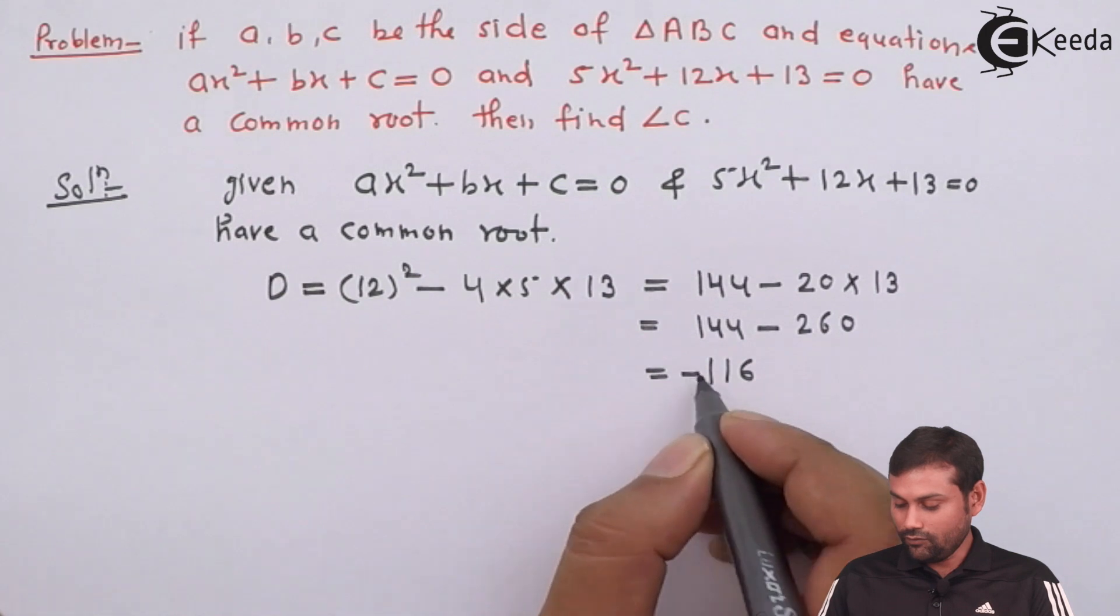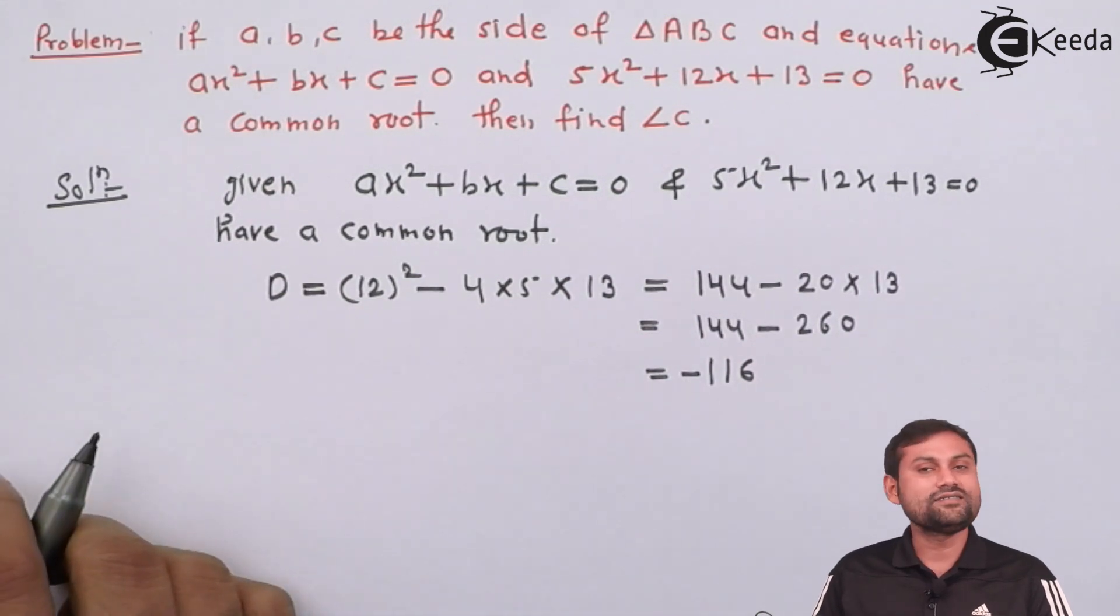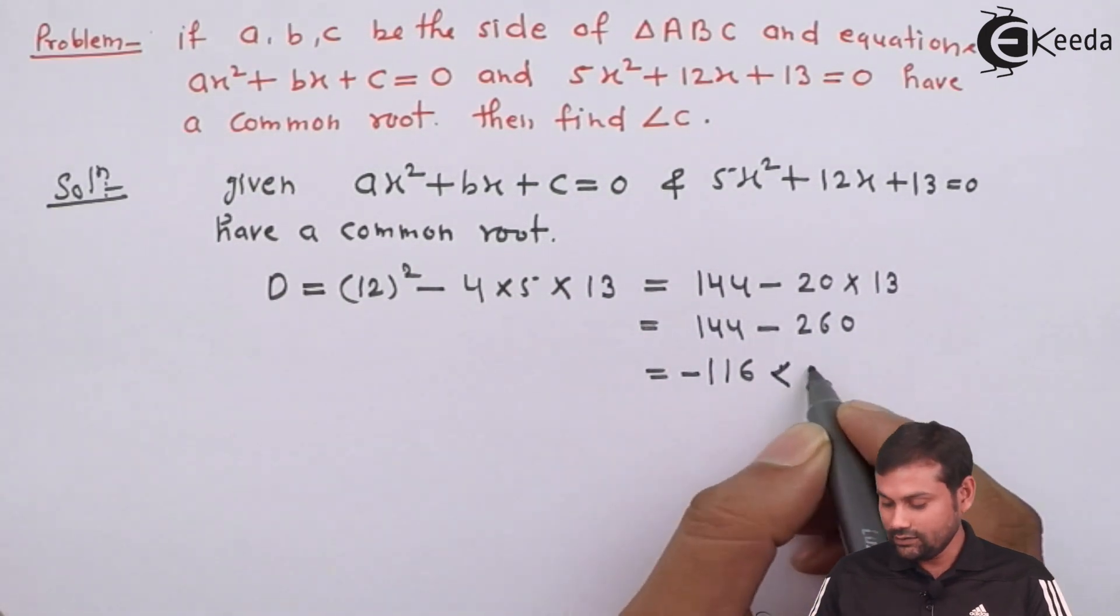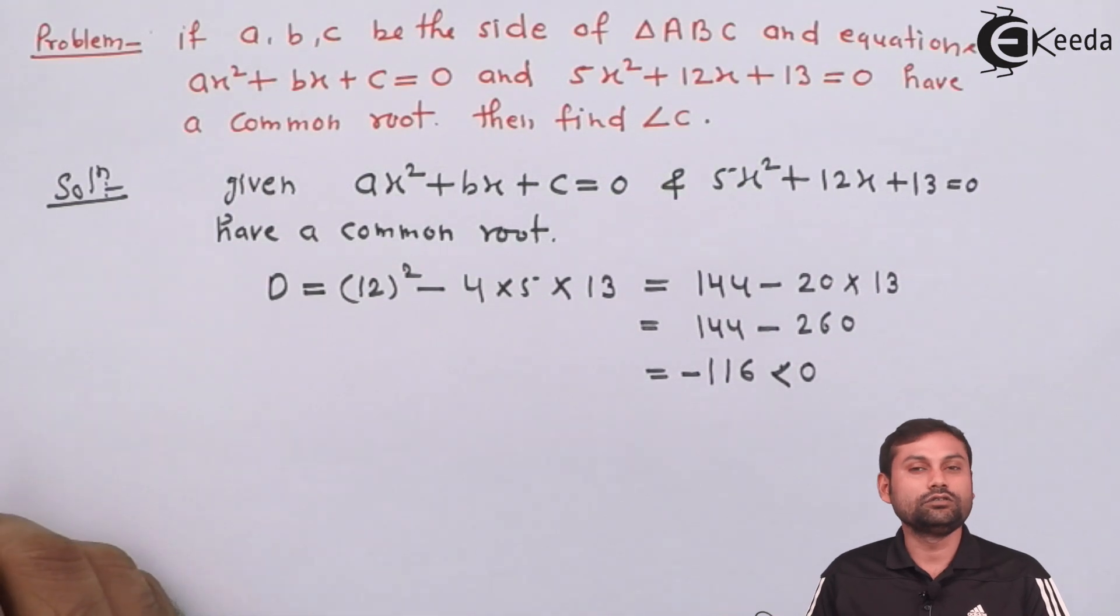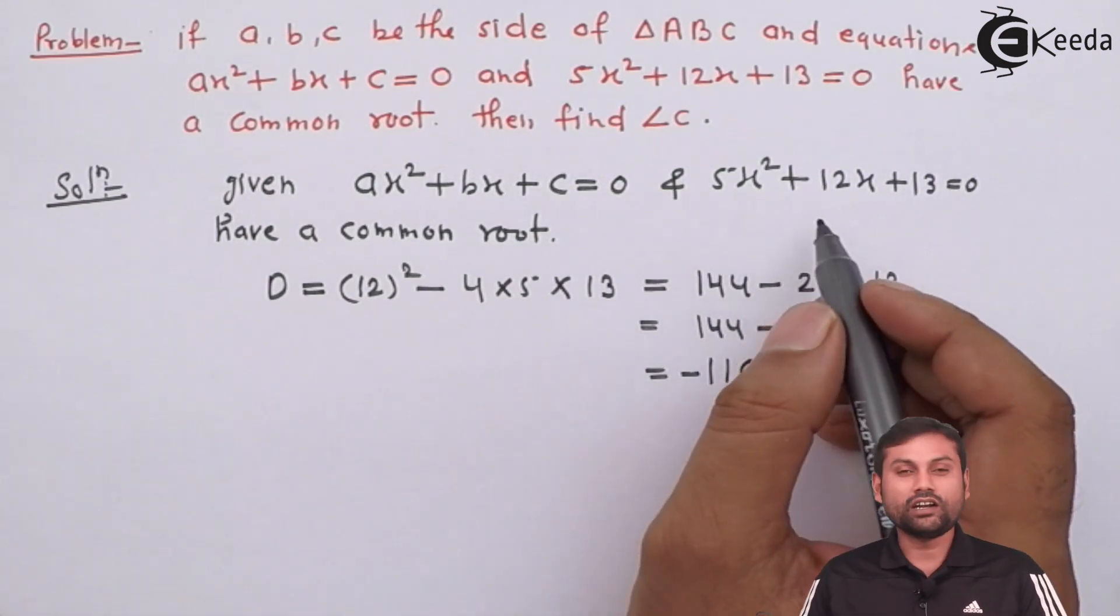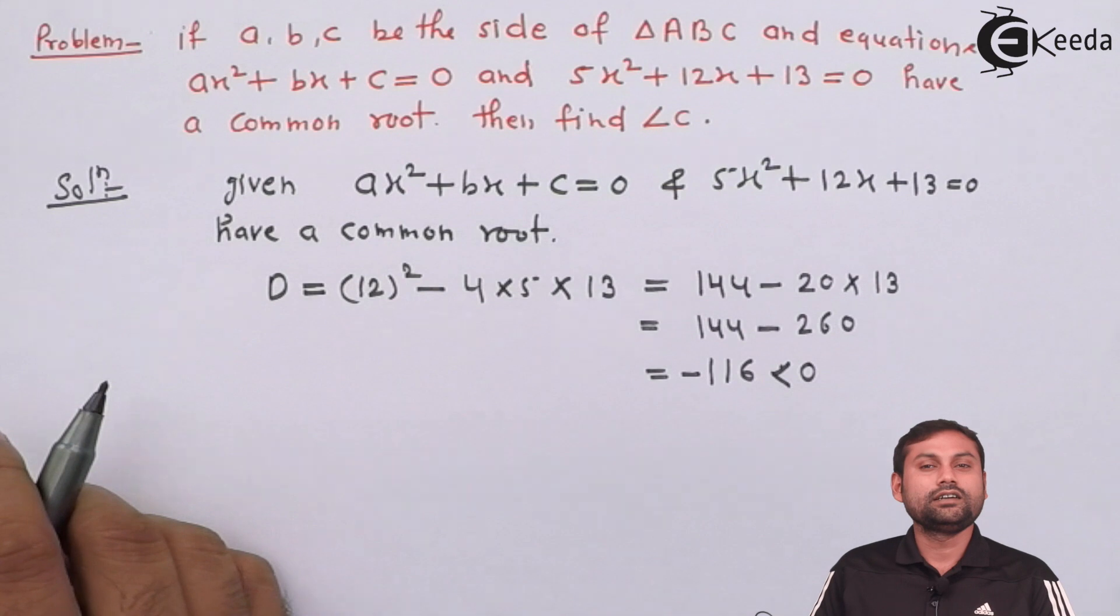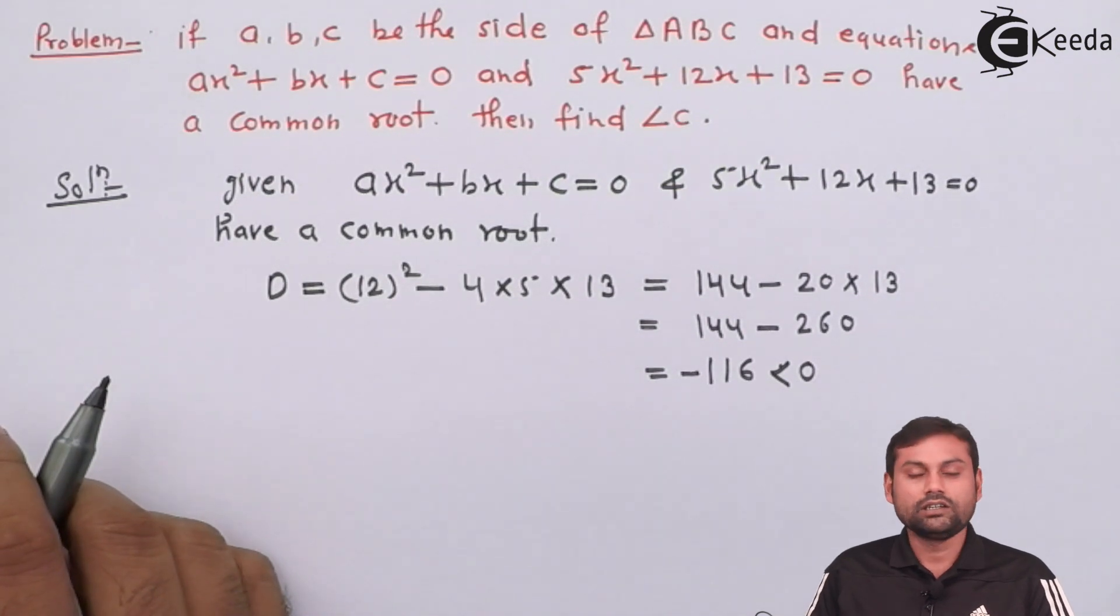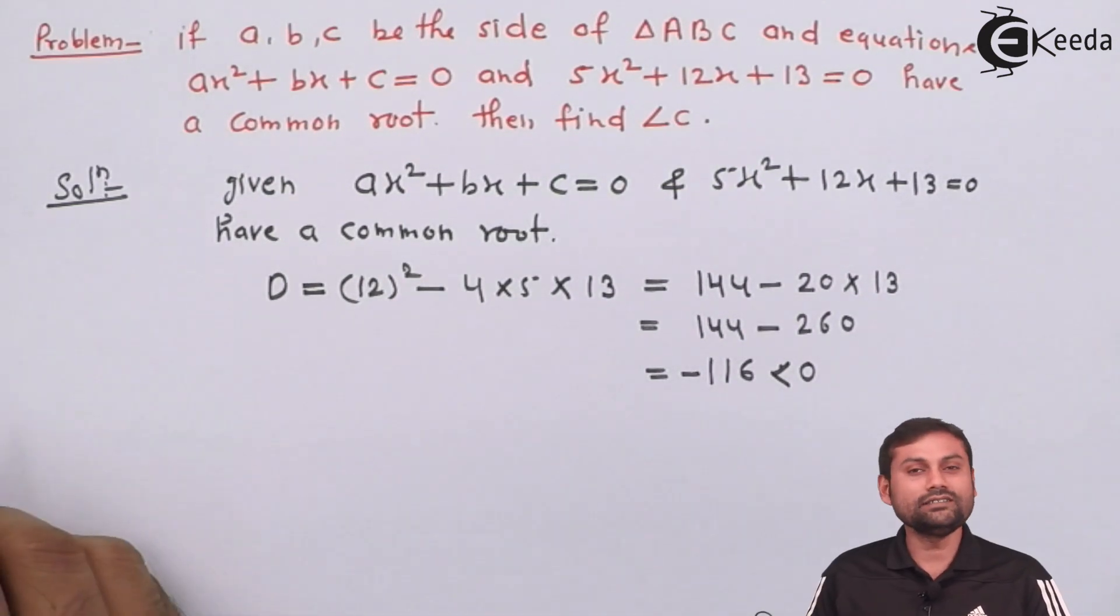So, minus of 116. That is less than 0. That means this quadratic equation has imaginary roots.